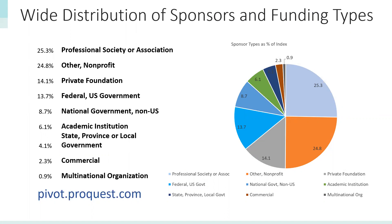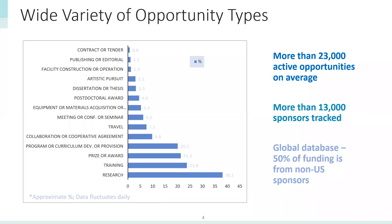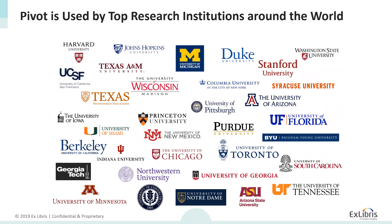There's a graph showing where the money comes from within Pivot, and it results in a wide variety of different opportunity types — editorial opportunities, publishing, facility construction, artistic pursuits, dissertations, all the way down to pure research funding opportunities. So there really is a wide variety of funding opportunities you can discover in Pivot.